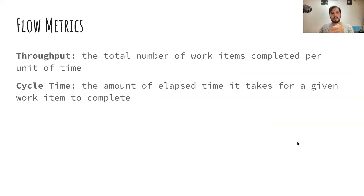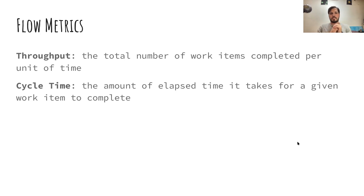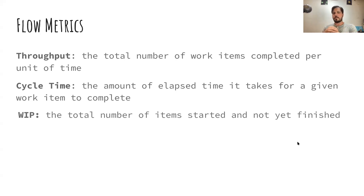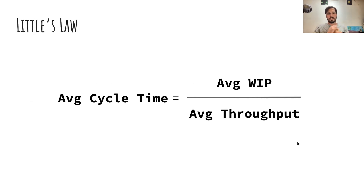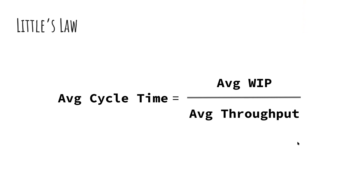I've introduced two of the flow metrics — throughput and cycle time. Throughput is the number of work items completed per unit of time. Cycle time is the elapsed time it takes for a given work item to complete — from when it started to when it finished. The third flow metric is WIP, work in progress: the total number of items started but not yet finished. These three flow metrics come from Little's Law. We don't want to calculate Little's Law because it's based on averages we can't really use for forecasting — but it describes the relationship between these things, and understanding that relationship is how we become more predictable.